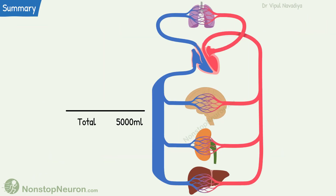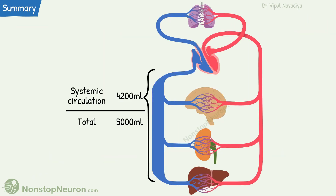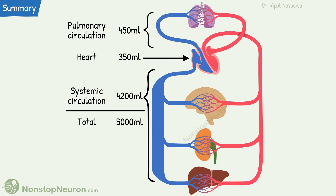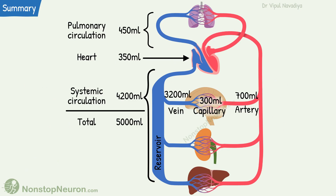Total blood volume is 5,000 ml, out of which about 4,200 ml is in systemic circulation, 450 ml is in the pulmonary circulation, and 350 ml is in the heart. In the systemic circulation, 700 ml blood is in arteries, 300 ml in capillaries, and 3,200 ml in veins, which serves as a reservoir of blood.